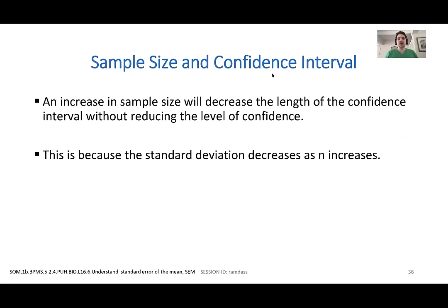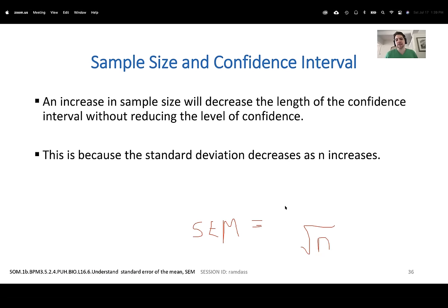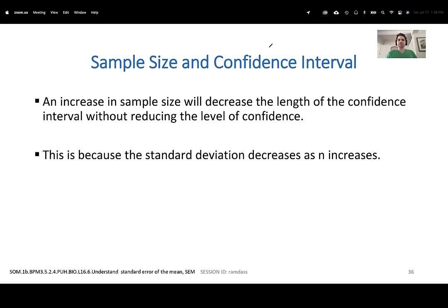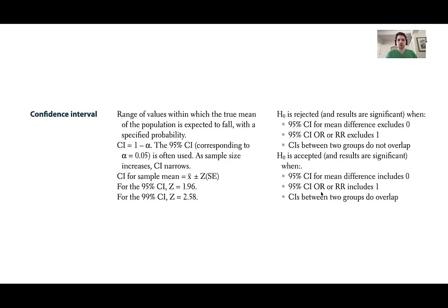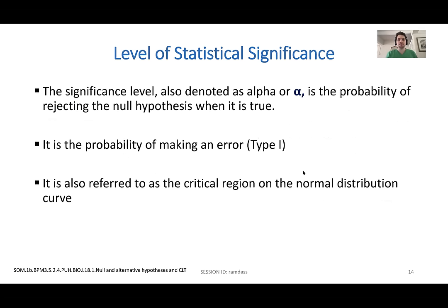Increasing the number you have is going to decrease the standard error of the mean. Because N is in the denominator, increasing the number gives you a decreased standard error of the mean — and that's the whole point. For ancillary data, 1.96 of your Z score correlates to 95%, but technically you'd need a table to figure these out. These are common numbers to know, especially 1.96 as it correlates to two standard deviations.